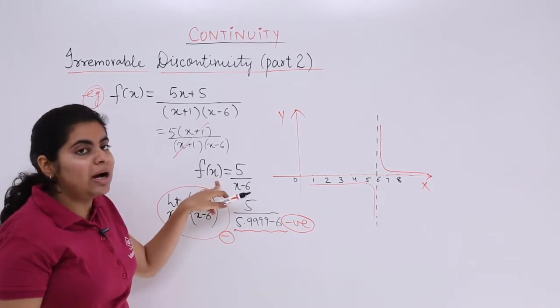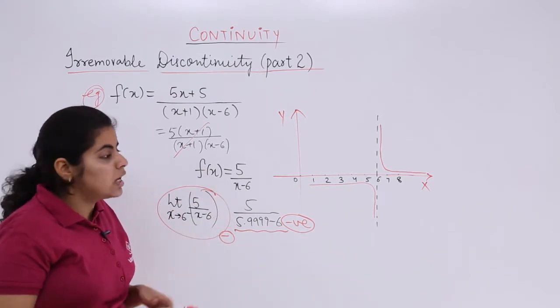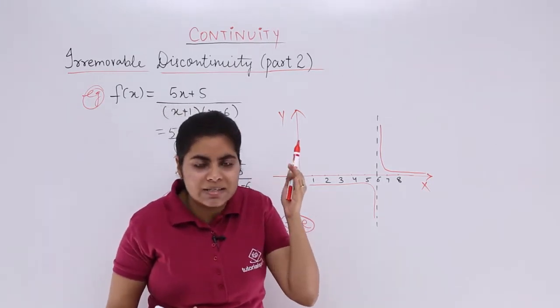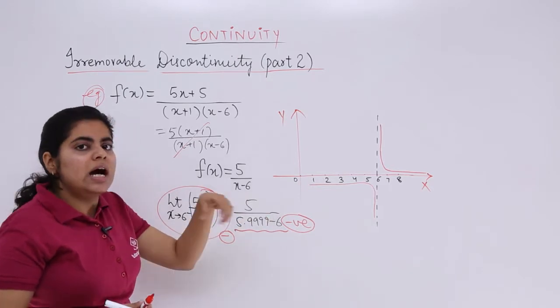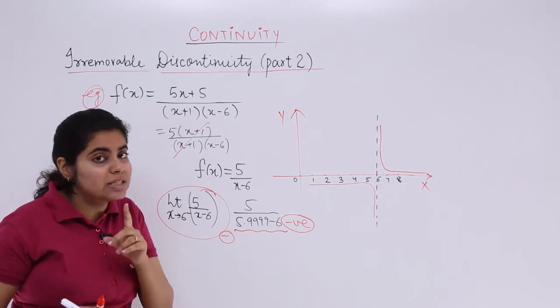Moving about, talking about right-hand limit. The right-hand limit of the function would be what? Whatever the value is, it would be 6.00001, say. If you put 6.00001 - 6, again you have what? 0.001 left, which is a very less value but still it is positive.